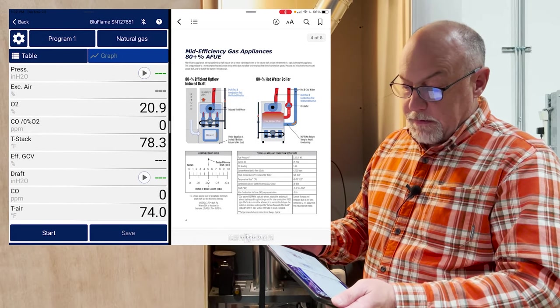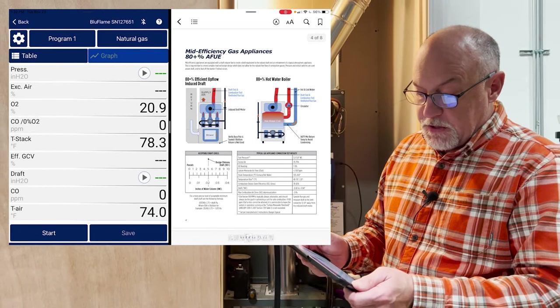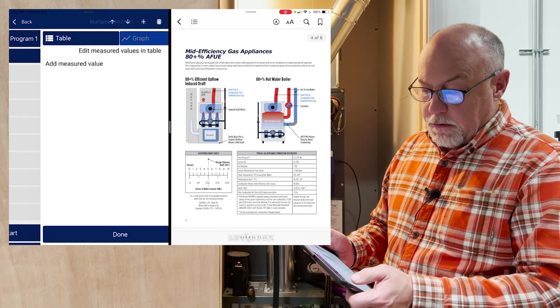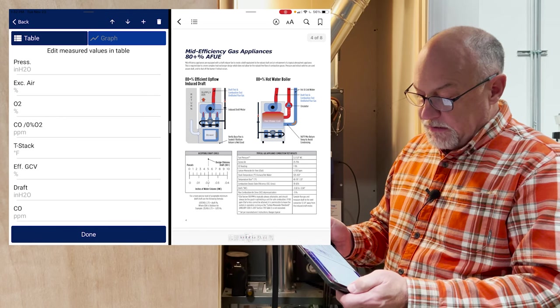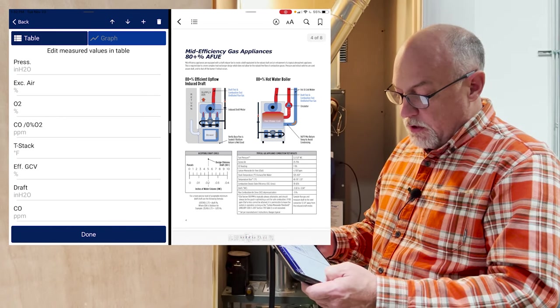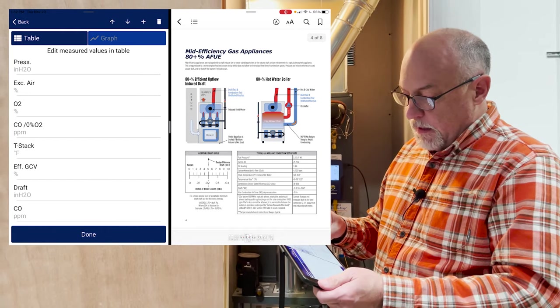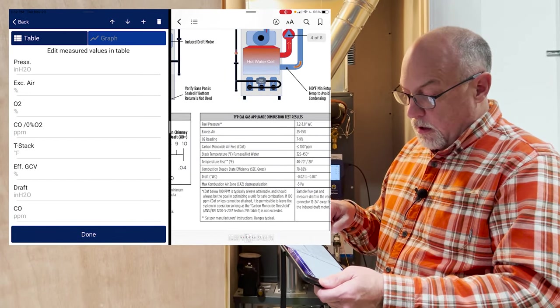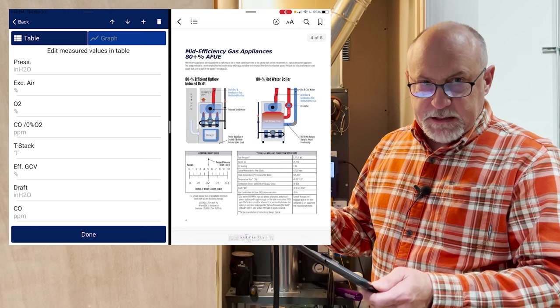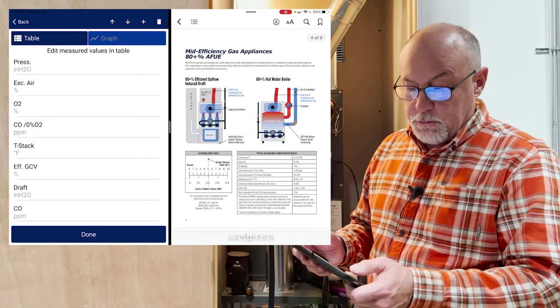What I've done here, then I sweep over to the mid efficiency appliances 80%. And then if you tap on the gear, you can actually edit the order. So you'll notice that I have pressure in inches of water column, I have excess air, I have O2, carbon monoxide, and I've sort of mirrored these readings that are on the typical readings for this gas appliance. So I have readings that I can reference right next to my actual combustion readings.